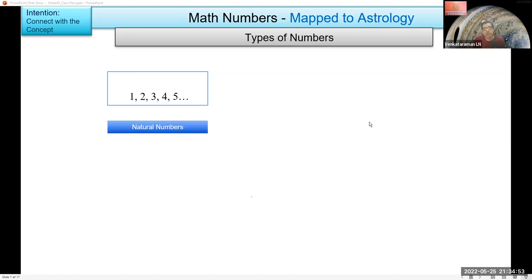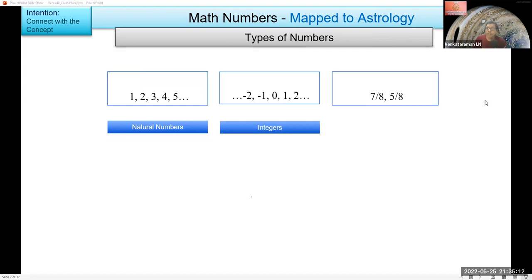Second one includes negative numbers. These are what Master Vasudev said earlier, integers. Next, what are these? Fractions. Yeah, fractions. There's a broader name for that.